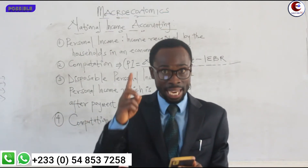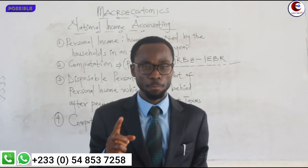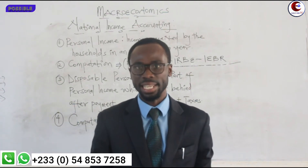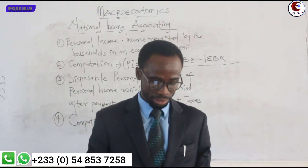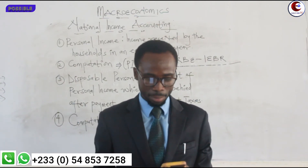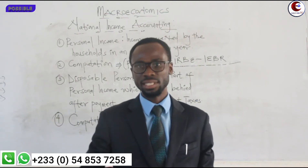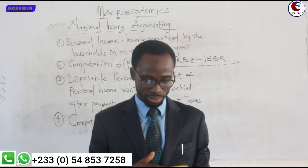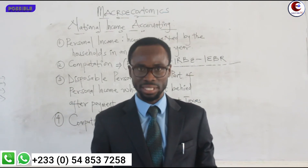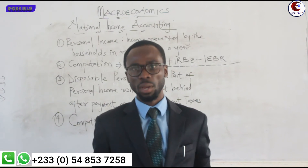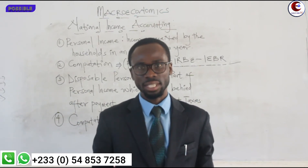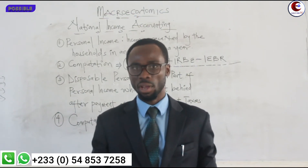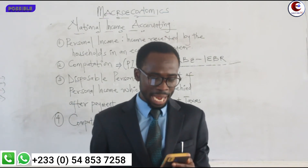For income received but not earned: one is scholarship — when a government or company gives you a scholarship, you did not work for it but they have given it to you as income. Bonus is also one item. Transfer payments from the government — when the government gives out money to people, it is income received but not necessarily worked for. Unemployment benefits are also in this category — if the government gives out unemployment benefits to people who are not working to ease their burdens, that is income received but not earned.